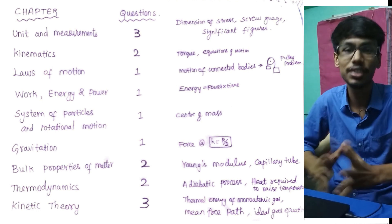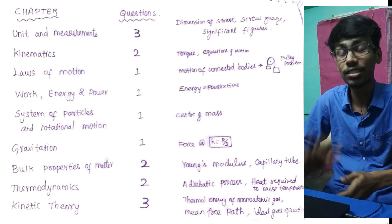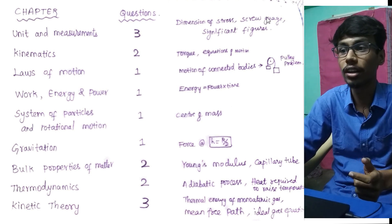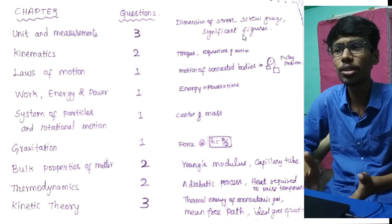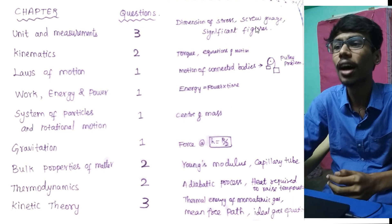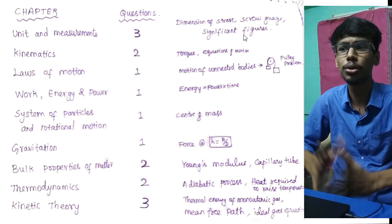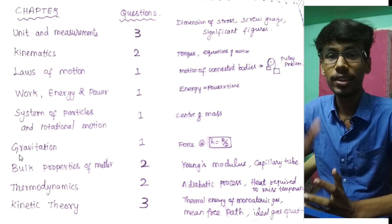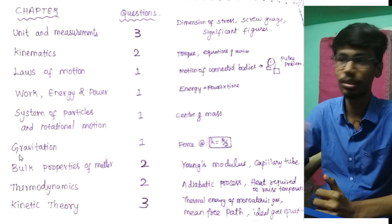In this video we will check out the physics chapter. The first chapter is Units and Measurements — a total of three questions are coming in 2020. Topics include dimensions, significant figures. For example: What is the dimensions of stress? — easy direct question. Significant figures — you can find one sum simply. Two are easy. You can find dimensional analysis. We will post dimensions analysis videos in the channel.